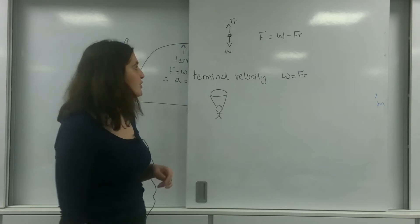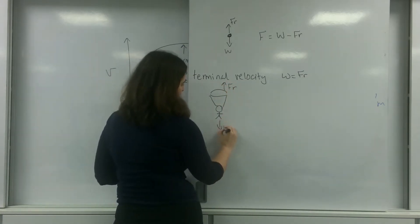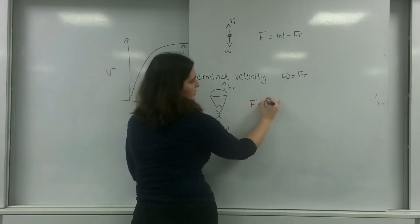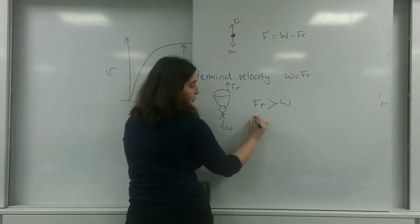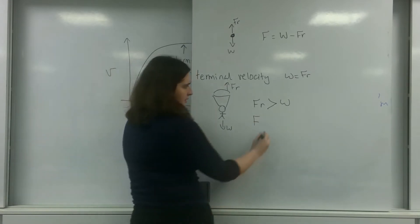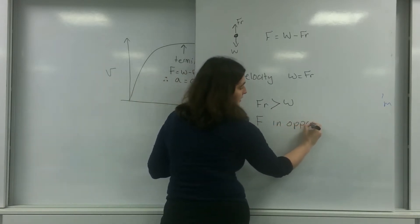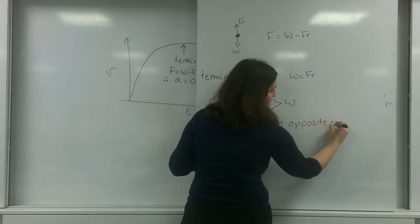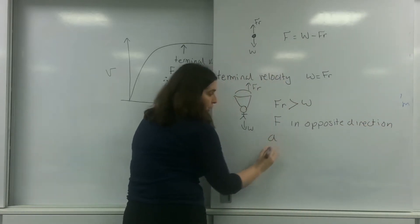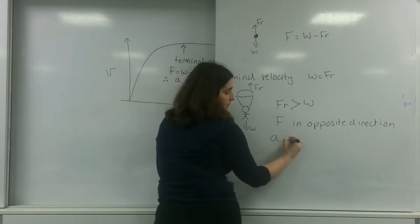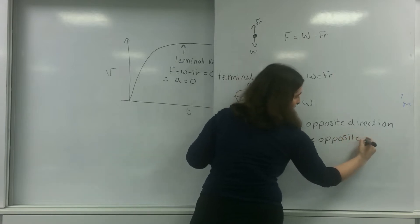You open the parachute. What happens? All of a sudden, you have an imbalance. That the friction is greater than the weight. Which means you have a force, a resultant force, in the opposite direction. Which means your acceleration is also in the opposite direction.